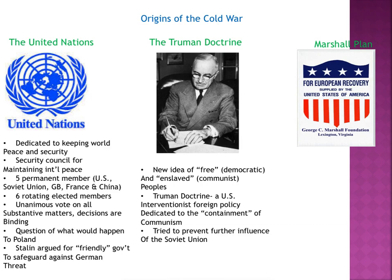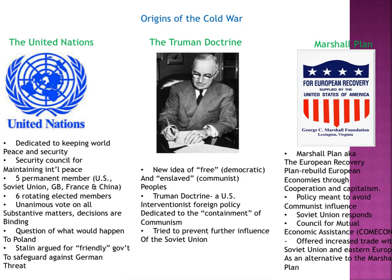They tried to prevent further Soviet influence through the Truman Doctrine, but they wondered how to incentivize being democratic. So they came up with the Marshall Plan — also known as the European Recovery Plan — which rebuilt European economies through cooperation and capitalism. The U.S. would give money to rebuild after the destruction of World War II. The underlying agenda was to avoid communist influence — a democratic country helping you, and they would like you to maintain your democracy. The Soviet Union responded with their own economic plan: the Council for Mutual Economic Assistance, or COMECON, offering increased trade as an alternative to the Marshall Plan.